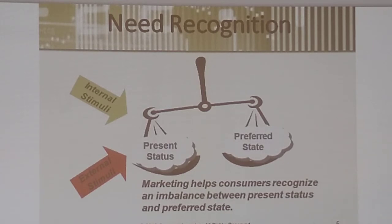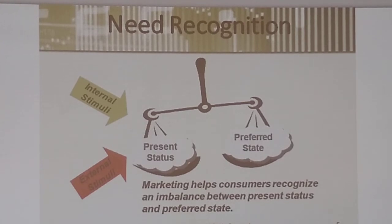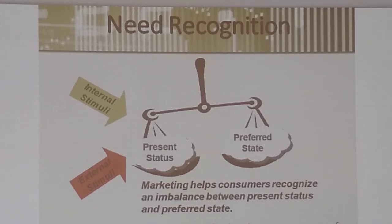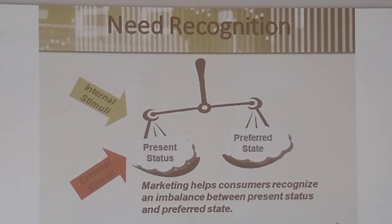We have present status versus preferred status on the scales. Present status is their point where they don't have the product, whereas preferred status is where they'd like to be — where they have the product. My present status is I don't have the pasta; my preferred status is I'd like to have the pasta so I can make pasta tonight. Or, my present status is I don't have a reliable car; my preferred status is I need a reliable car so I'd like to go out and buy a new one. Marketing helps consumers recognize an imbalance between the present status and the preferred state.